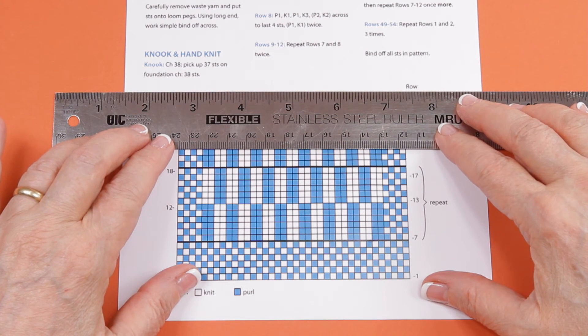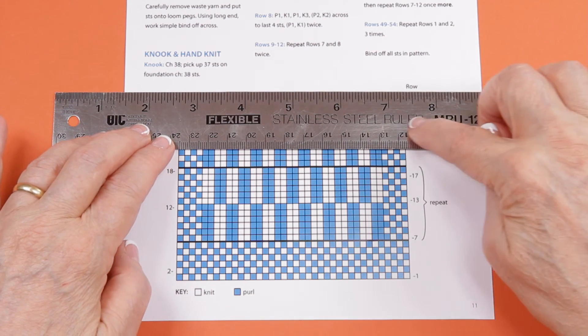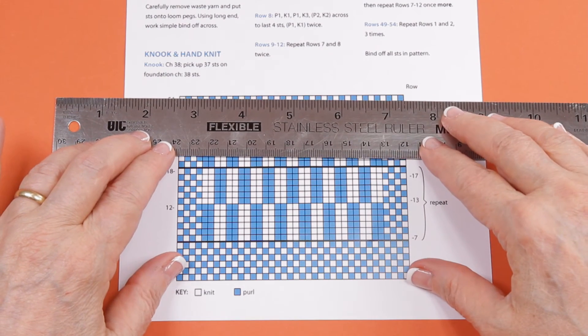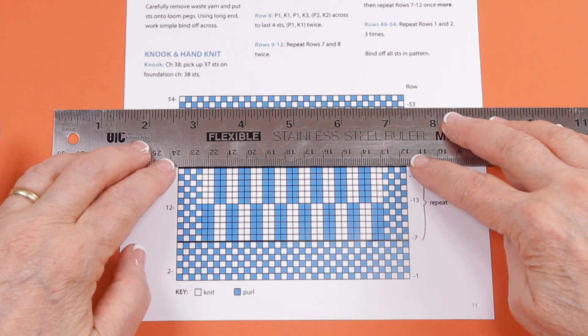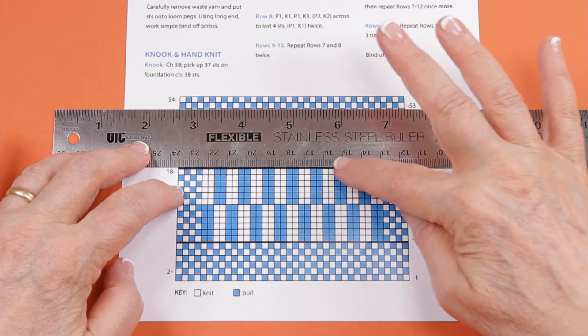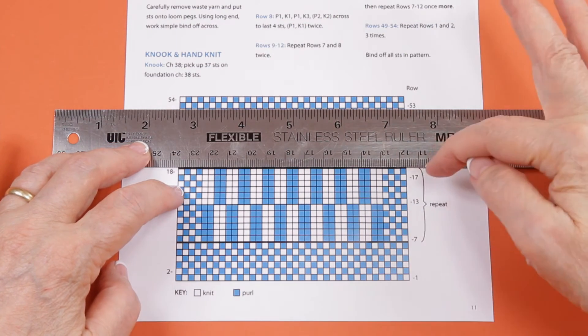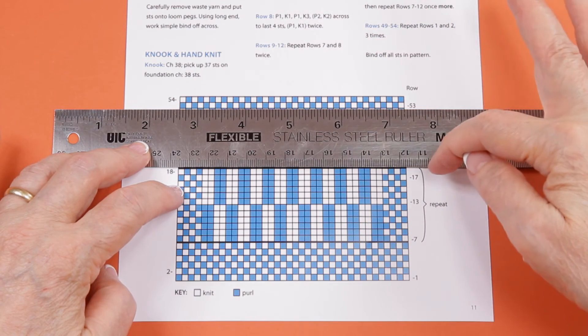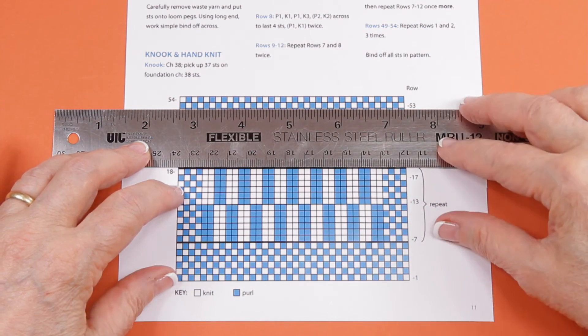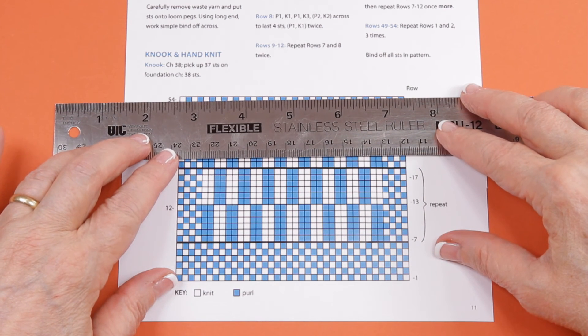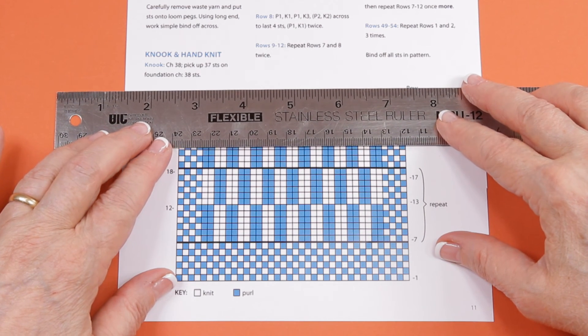So this is how you follow a loom knit chart. The reason I have a ruler here, if I were working a row, I just place this ruler above it, and that way I know what my previous row looks like and what the row I'm doing is directly below the ruler. It's just a helpful way to keep track of where you are.